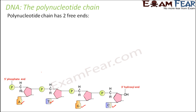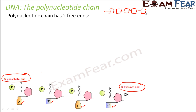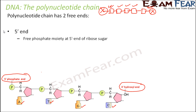The chain has multiple nucleotides, but it always has two free ends. This is similar to a train with multiple compartments connected to one another — any compartment in the middle has a compartment on both ends, but the first and last compartments each have one free end. Similarly, the polynucleotide chain has two free ends.